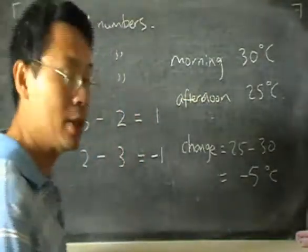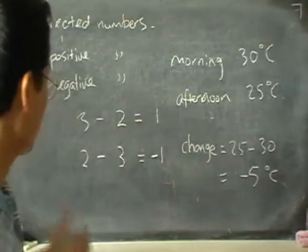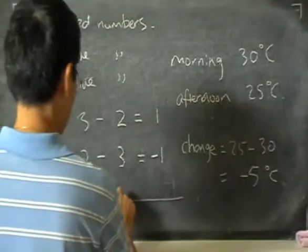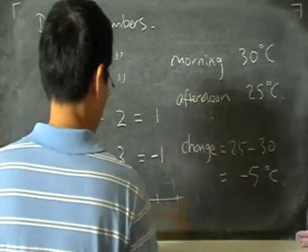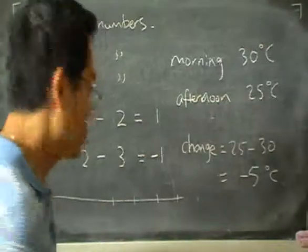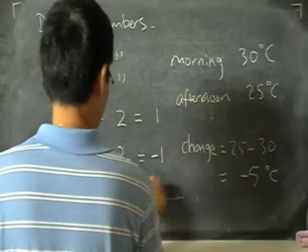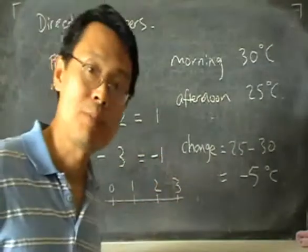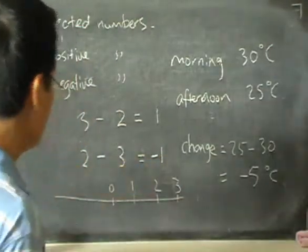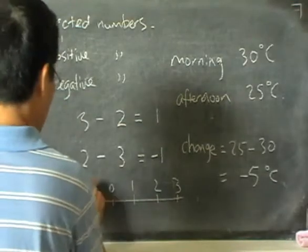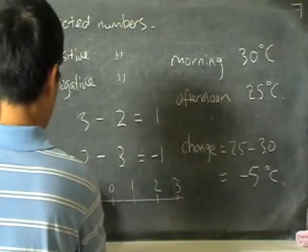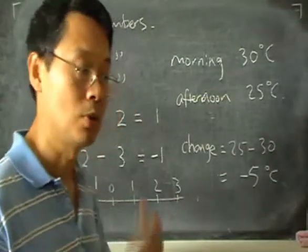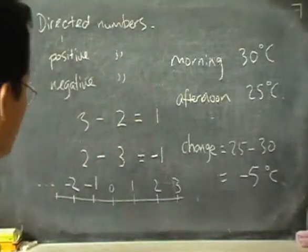One useful way to visualize positive or negative numbers is to draw a number line. I can have a line with marks on it to represent numbers like 0, 1, 2, 3 and so on — these are positive numbers. And I can imagine that if I have negative numbers, they go along the other side of the line: minus 1, minus 2, and so on. So that's yet another way to think about negative numbers.